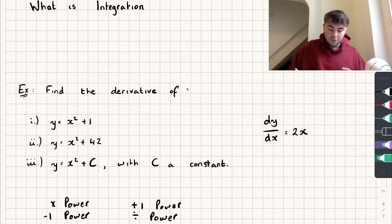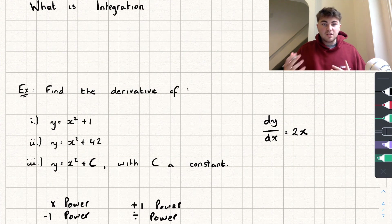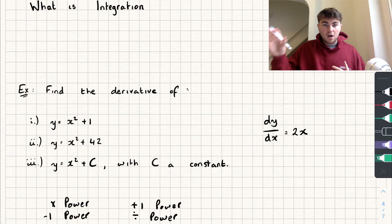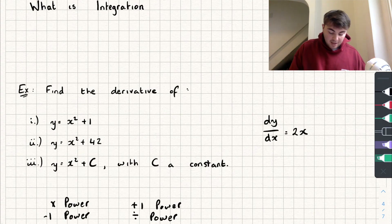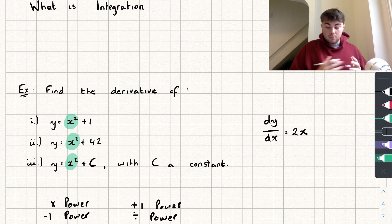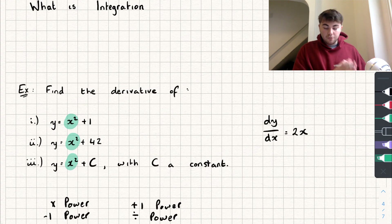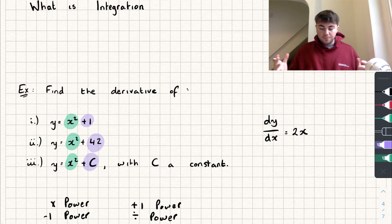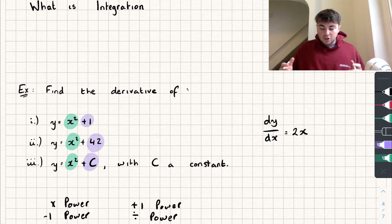Let's take our derivative 2x and follow the integration rules. We add one to the power to get x squared, then divide by the new power — 2x squared divided by 2 — which leaves us with x squared. That's the first part of all of those original equations, so integrating is taking us part of the way back. But remember, it should take us back to the original function — so what about all those constants? Where did they go?